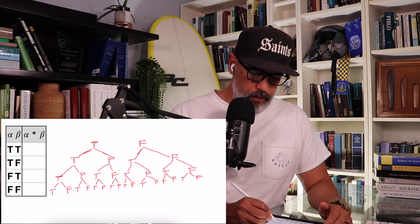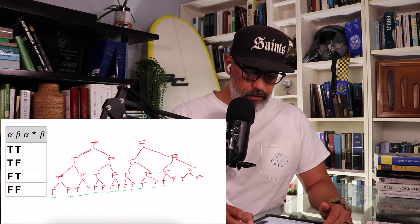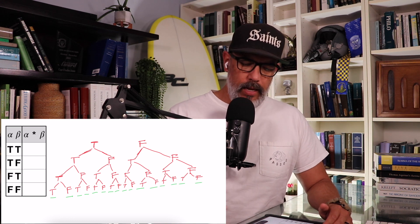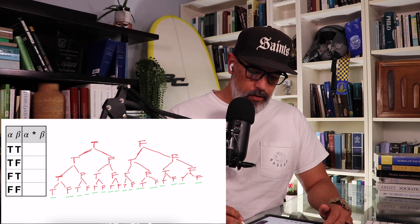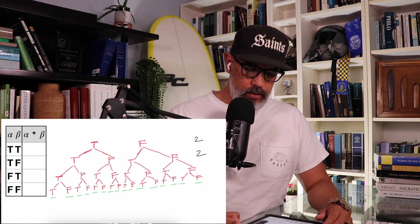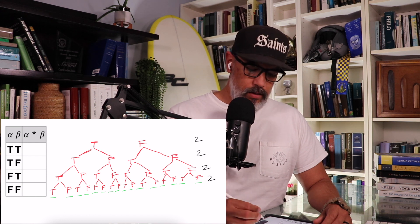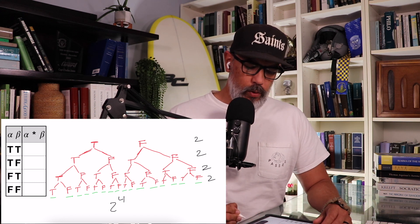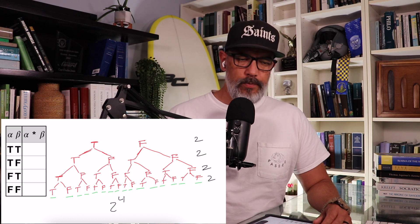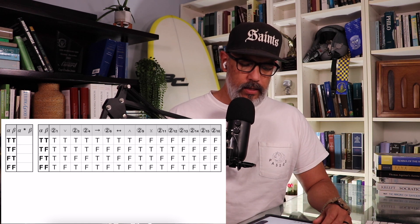Let's count up all of those different possibilities: one through sixteen — 16 possibilities. It's 16 possibilities because we start with two options and then we have two times those two options, and two times those two options, and two times those two options. Since we have four different spots to fill out, we have two to the fourth different possibilities, and two to the fourth equals 16.